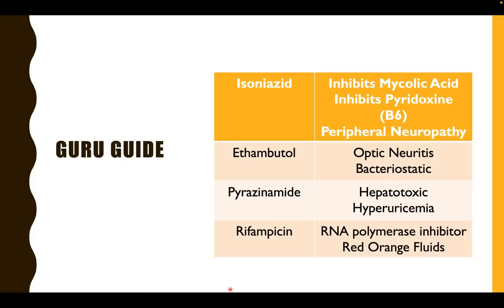Ethambutol causes optic neuritis, and out of the first-line anti-TB drugs, it is only ethambutol which is not bactericidal. Pyrazinamide is hepatotoxic and notorious for causing hyperuricemia; therefore, avoid pyrazinamide in patients with gout. Rifampicin — letter R — inhibits RNA polymerase (also letter R) and also causes red-orange discoloration of fluids.